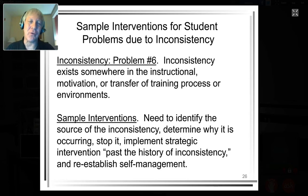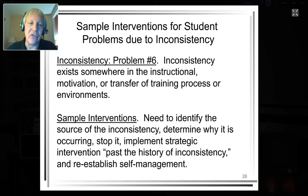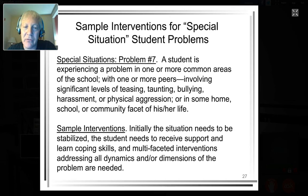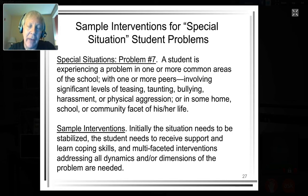Inconsistency is tough. Is it inconsistent instruction? Inconsistent incentives and consequences? Inconsistent accountability? You've got to eliminate the inconsistency, stabilize and recalibrate the behavior, and then fade the interventions out so the student is self-managing. For high-hit seven — special situations — the rule of thumb is when kids are in crisis, sometimes you've got to stabilize the crisis before implementing the intervention, because the kid is not open to intervention when everything is rolling around them.